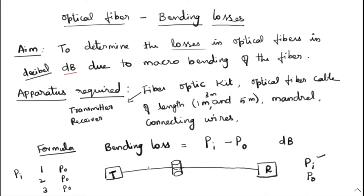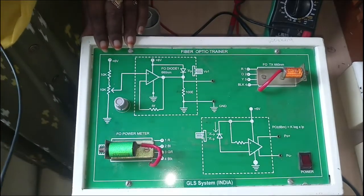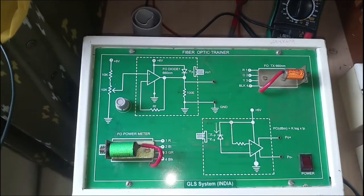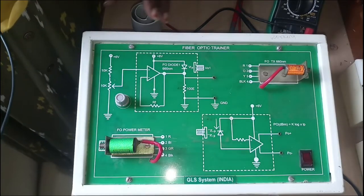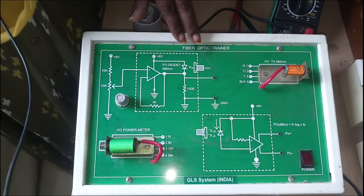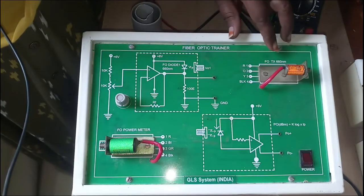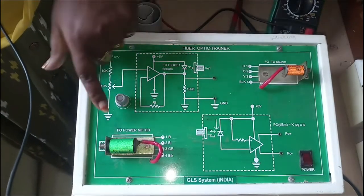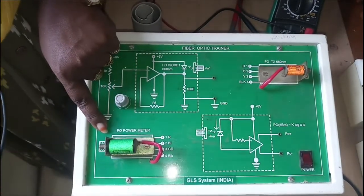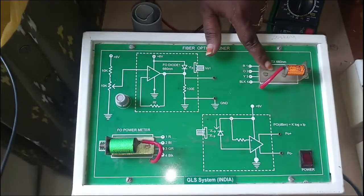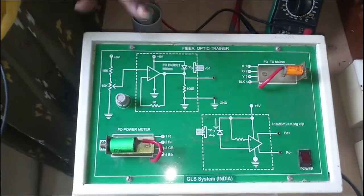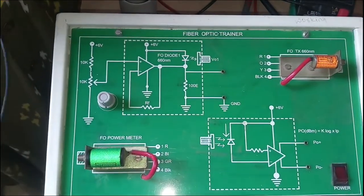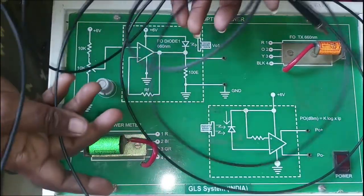Now let us go into the lab to do this experiment. The apparatus required includes the fiber optics trainer board. Here this is the transmitter section and this is the receiver section. One part is the transmitter and another is the receiver, and this is the power input knob.